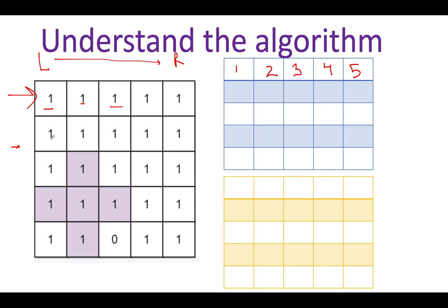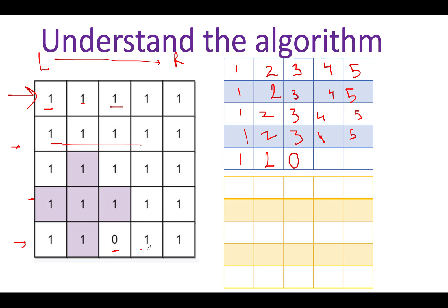Let's move on to the next row. Again we start from one because the first element is one, then two, three, four, five — contiguous in nature. Similarly for the third and fourth rows: one, two, three, four, five each. For the fifth row it's interesting: we have one, two, then a zero — as soon as I see a zero I reset my variable to zero. Then moving to the next element I have one, and then two, by virtue of two contiguous ones. I have now iterated over the complete matrix, building an array moving from the leftmost to the rightmost terminal in each row.